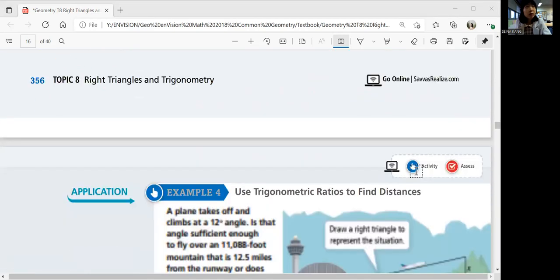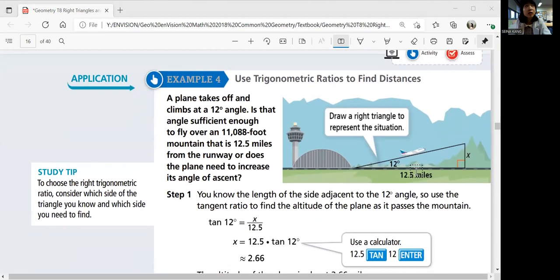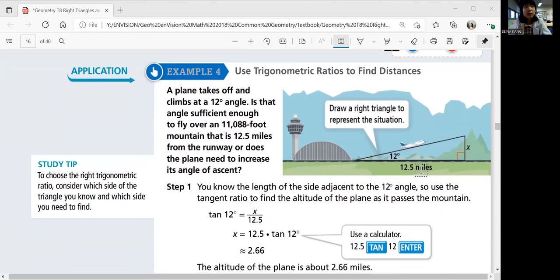Let's move on to example four: application, use trigonometric ratios to find distances. A plane takes off and climbs at a 12 degree angle. Is that angle sufficient enough to fly over an 11,088 foot mountain that is 12.5 miles from the runway, or does the plane need to increase its angle of ascent?